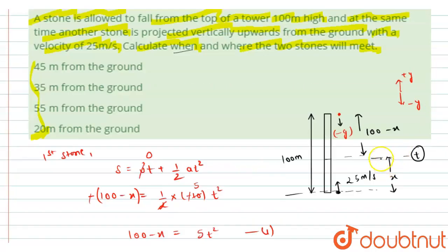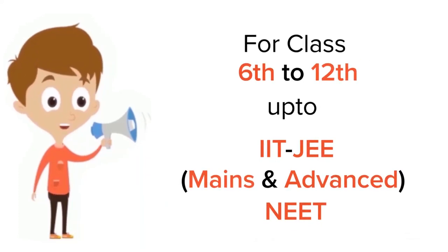So from the given options we have a, b, c and d. The two stones will meet after t equals to 4 seconds and they will meet at the distance of 20 meters from the ground, so option d is the correct answer.